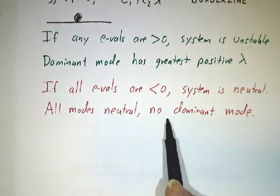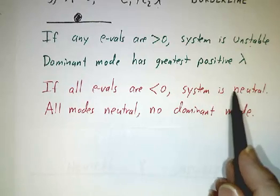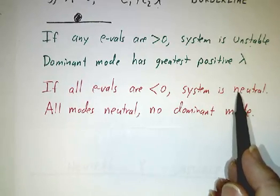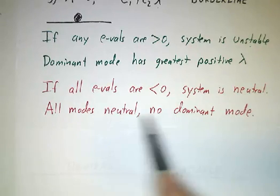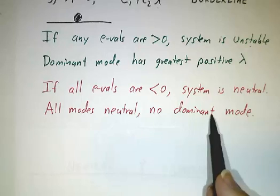But if all the eigenvalues are negative, then there is no dominant mode because the system is neutral. None of the modes grow. None of the modes shrink. They all just oscillate back and forth. And there's no one mode that you would call dominant.